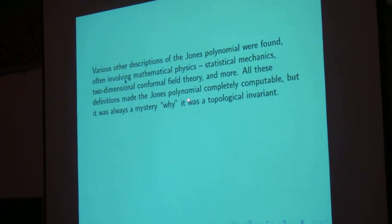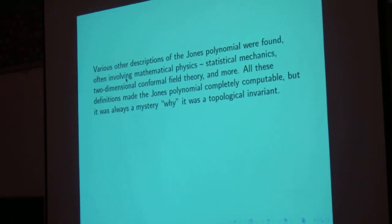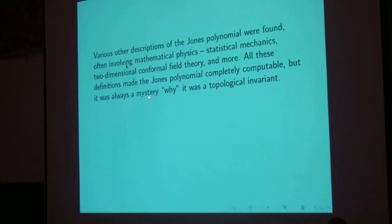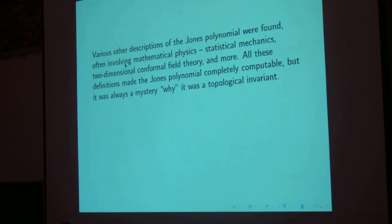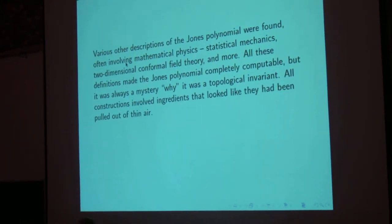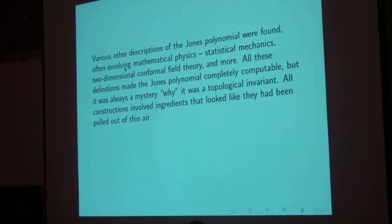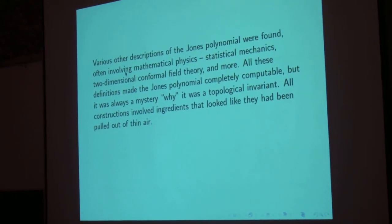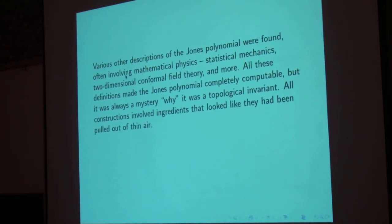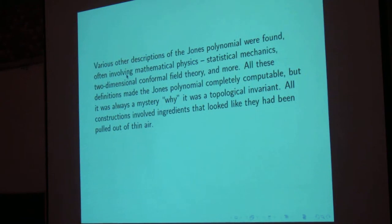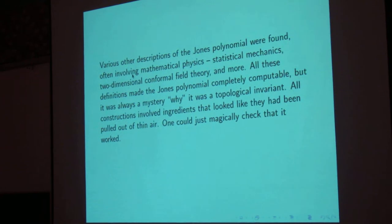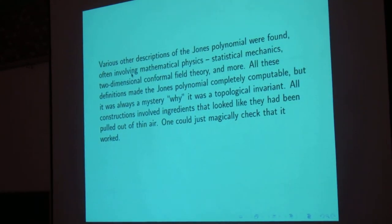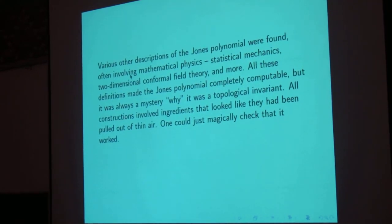So all these definitions made the Jones polynomial completely computable. You add 2 to the 30 terms, you can compute it. But it was always a mystery why it was a topological invariant. All constructions involved ingredients that looked like they'd been pulled out of thin air, like the particular local factors that we used in that vertex model with the discrete statistical mechanics. But you could magically check it worked. You could prove that if you changed the way the knot had been projected, the sum would come out to be the same.